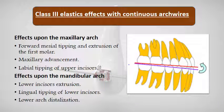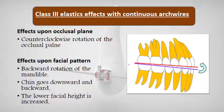The effects of Class 3 elastics: effects upon the maxillary arch include forward and mesial tipping and extrusion of the first molar, maxillary advancement, and labial tipping of the upper incisors. Effects upon the mandibular arch include lower incisor extrusion, lingual tipping of the lower incisors, and lower arch distalization. Effects upon the occlusal plane include counterclockwise rotation of the occlusal plane. Effects upon facial pattern include backward rotation of the mandible, the chin going downward and backward, and increased lower facial height.